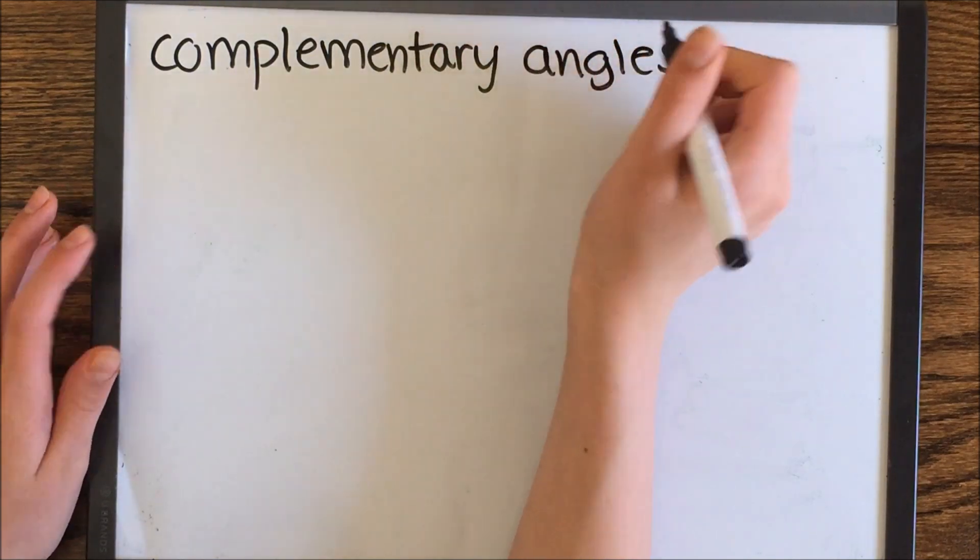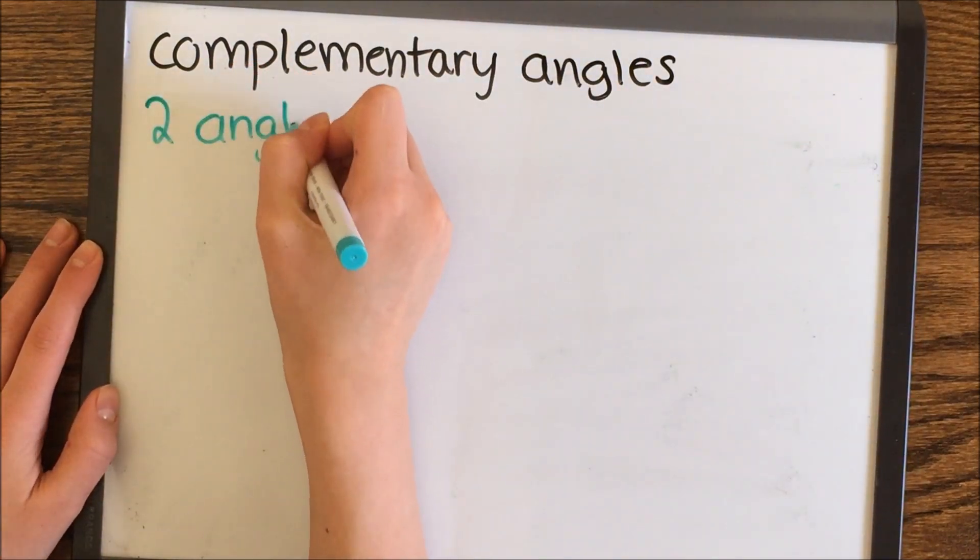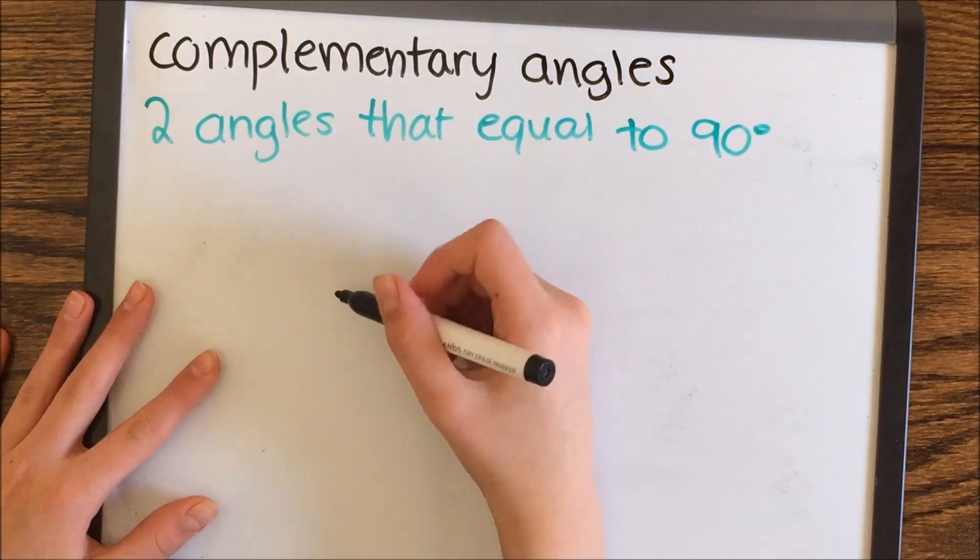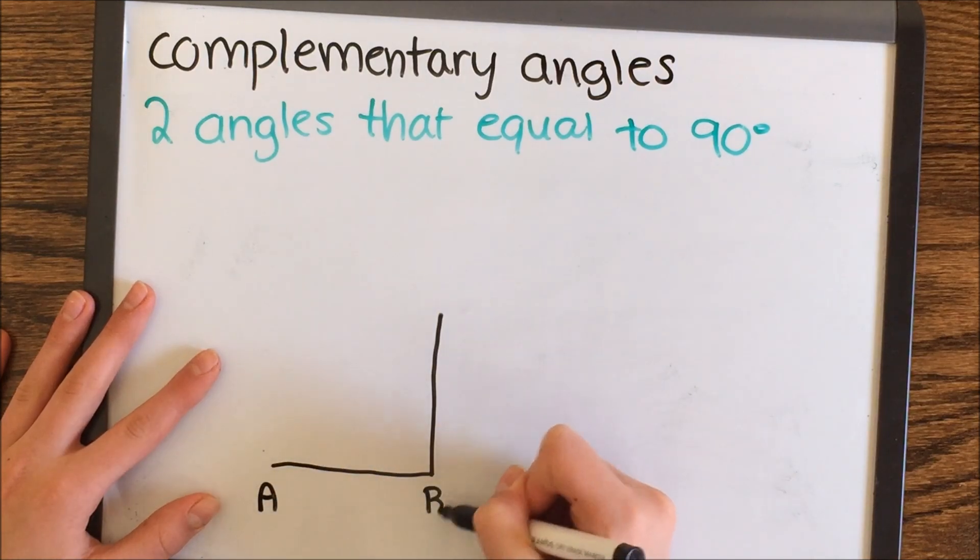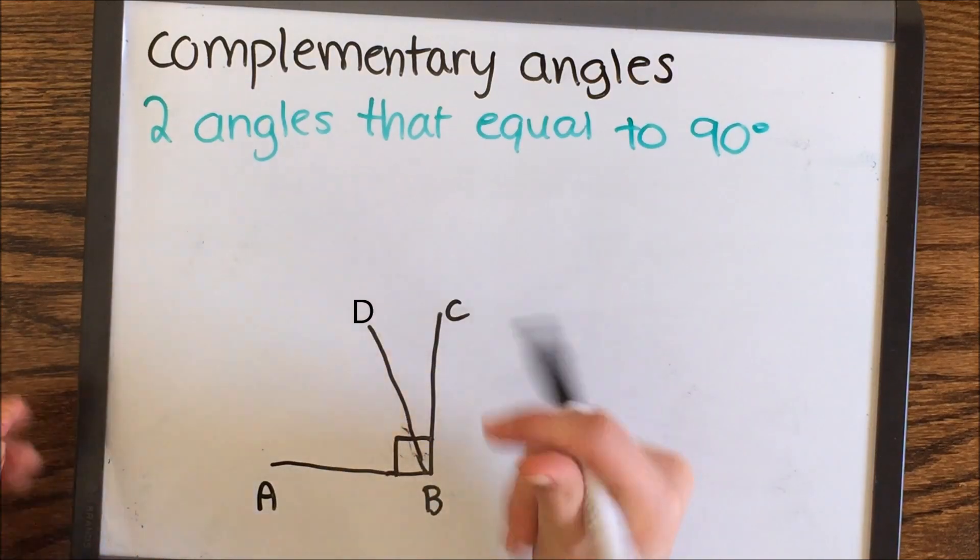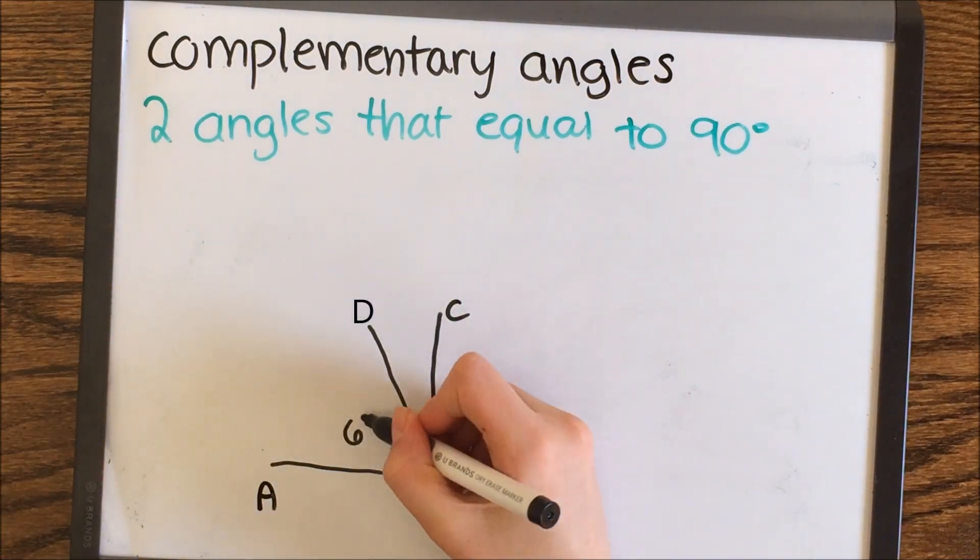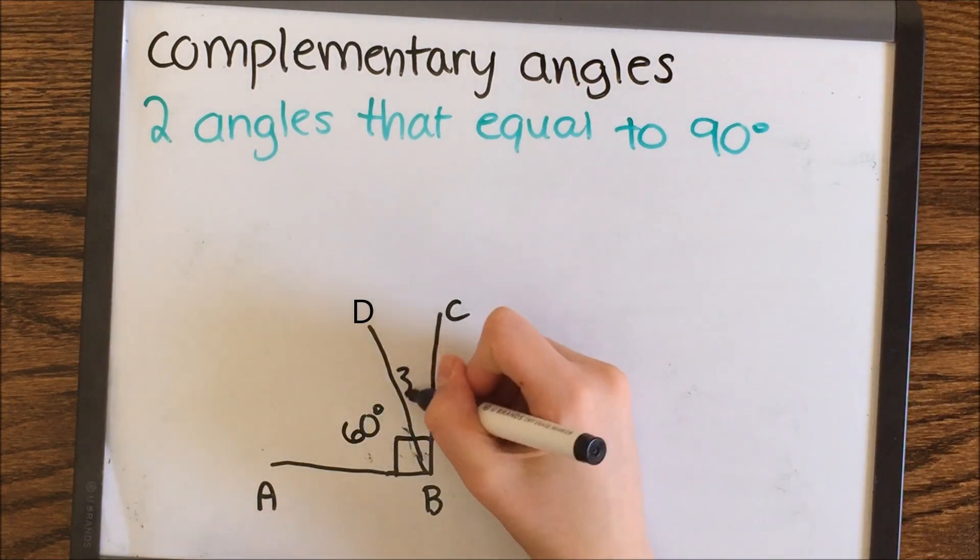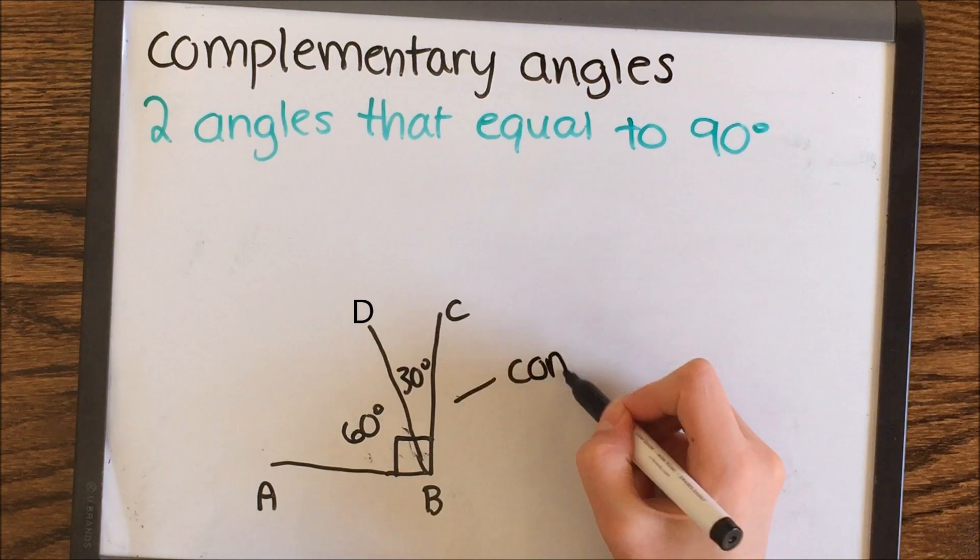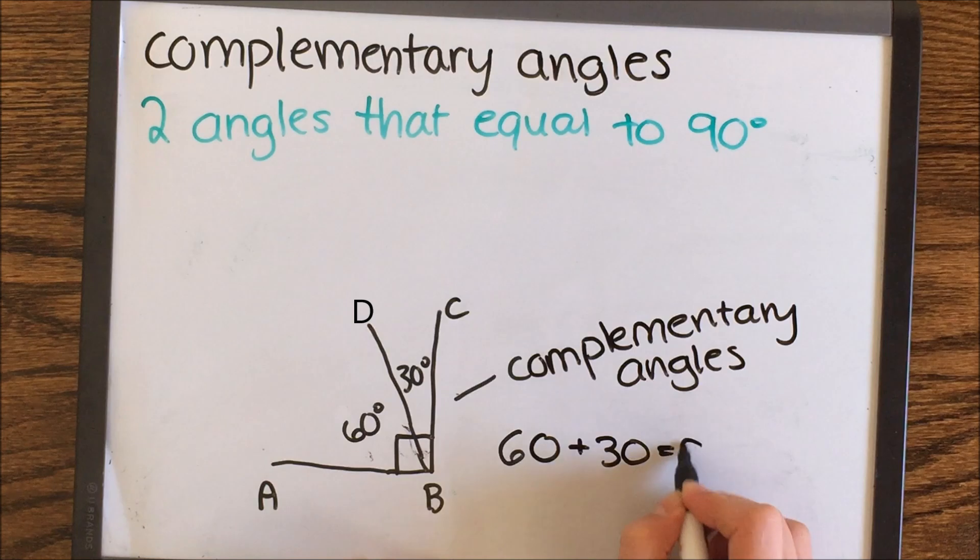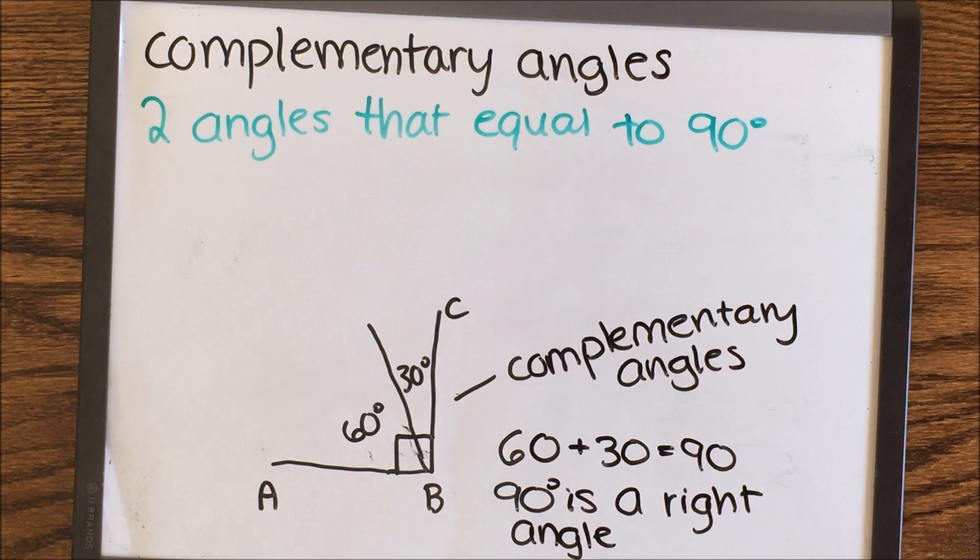Complementary angles are two angles that equal 90 degrees. They don't have to be congruent. They can be any measure. The angle ABD is 60 degrees and DBC is 30 degrees, so they equal 90 degrees. That's why they are complementary, and they also are adjacent. You can see clearly that they are 90 degrees because ABC has that square, which means it's a right angle.